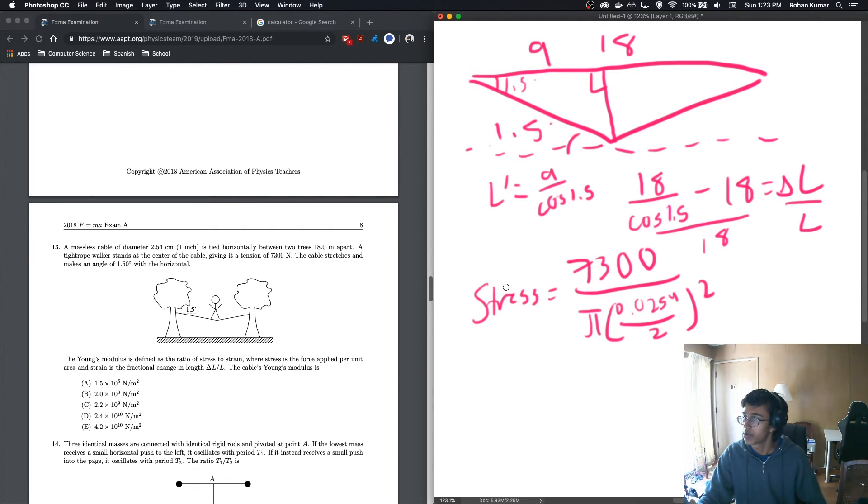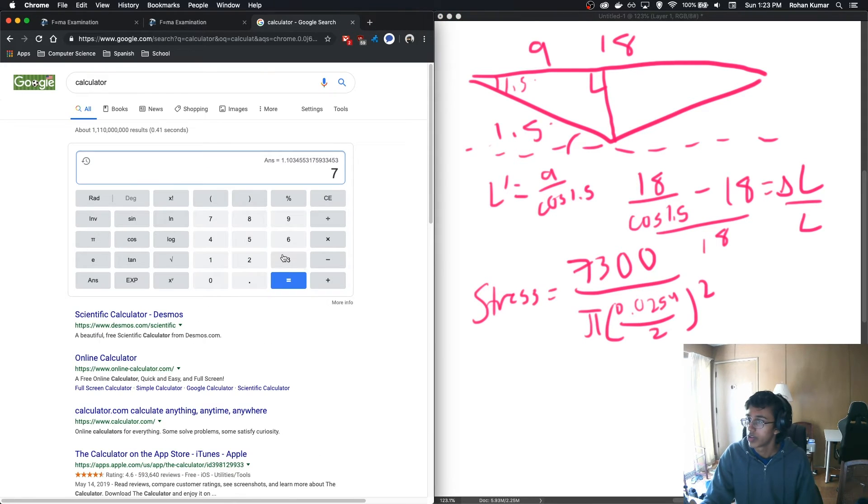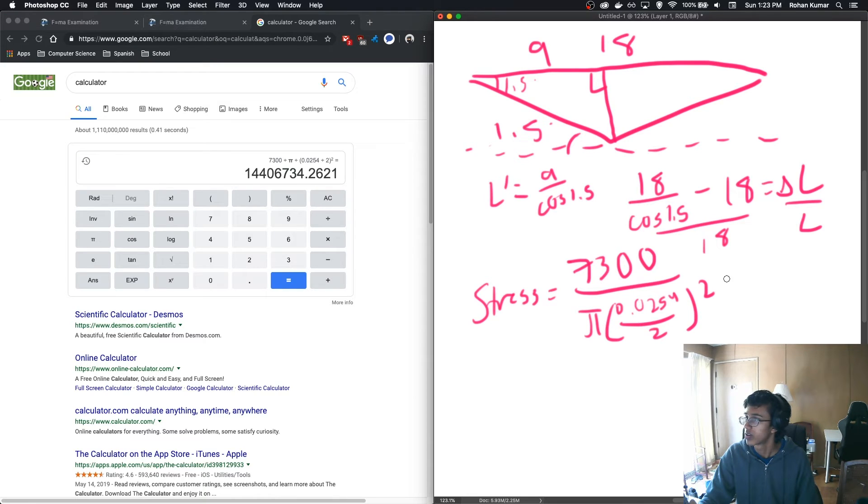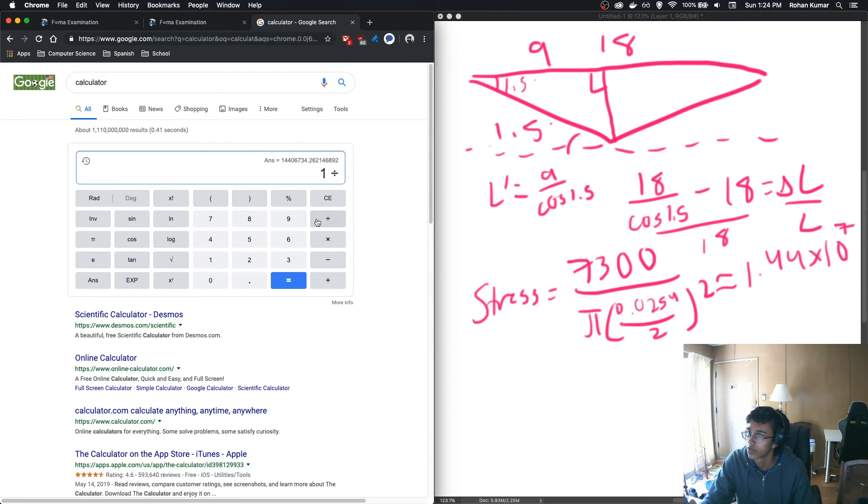So now we just have to divide stress by strain and we get our answer. Let us calculate each one individually and then we'll put it all together. 7300 over pi over 0.0254 over 2 squared is equal to... That's a big number, but it should be approximately 1.44 times 10 to the 7, I think. And then our strain should be 1 over cosine of 1.5. Make sure it's degrees. And then minus 1.